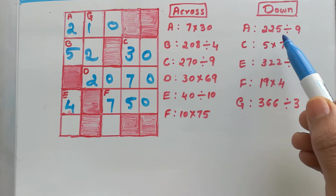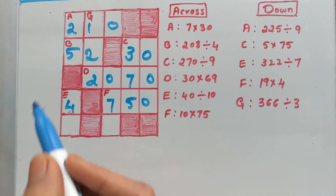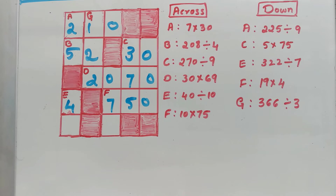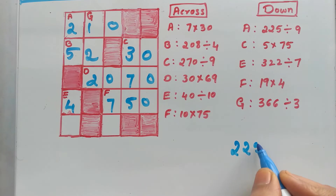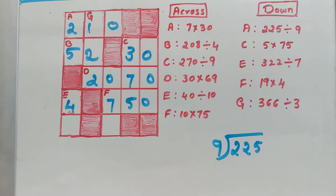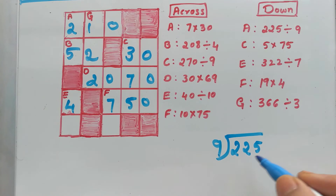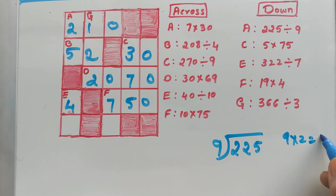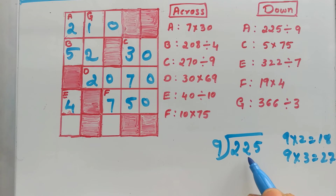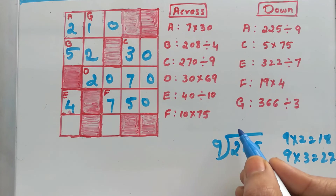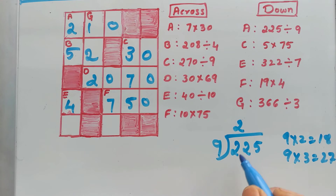Down A: 225 divided by 9. We've got the answer 25, but let's verify. Here 2 is smaller than 9, so take the next number — 22. 9 times 1 is 9, 9 times 2 is 18, 9 times 3 is 27. 27 is greater than 22, so take 9 times 2 which is 18. Divide with 2.